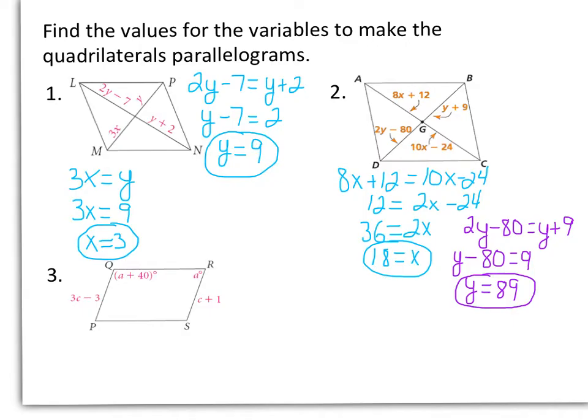Last example: we have two things to find — A and C. A has to do with angles. Remember that in a parallelogram, opposite angles are congruent and consecutive angles are supplementary.